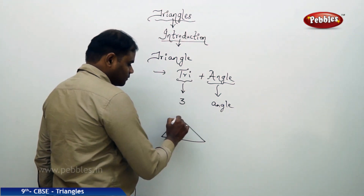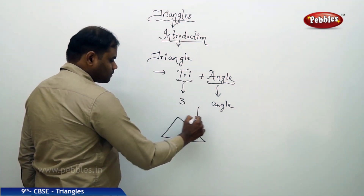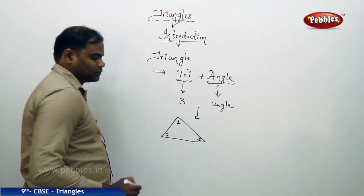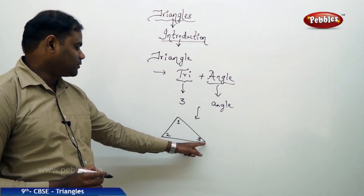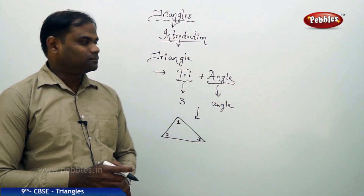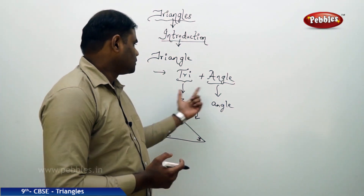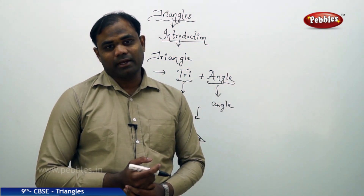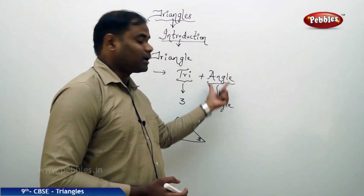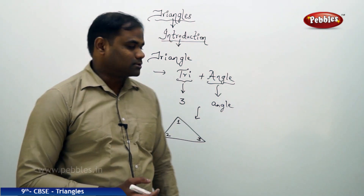A triangle looks in this shape. It has three angles: angle 1, angle 2, angle 3. So a triangle has three angles — angle 1, angle 2, angle 3. A figure which involves three angles is what is called a triangle and looks in this shape.